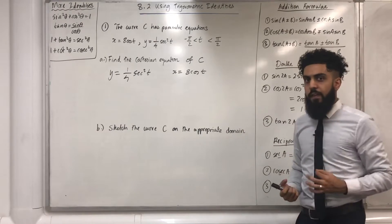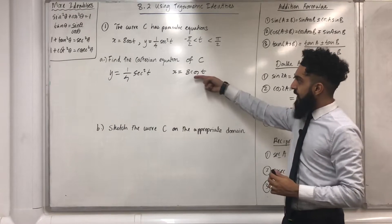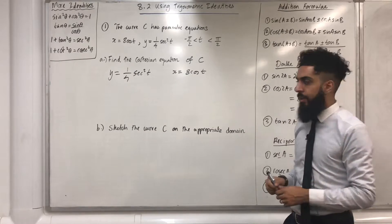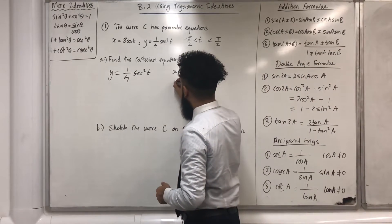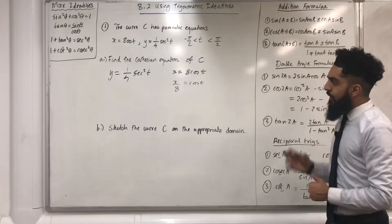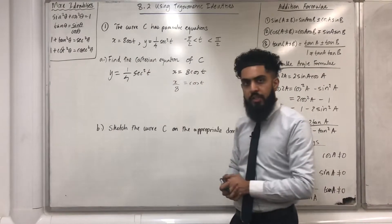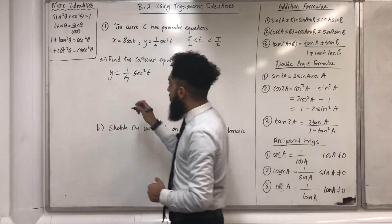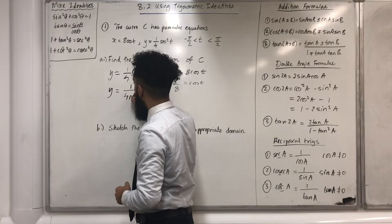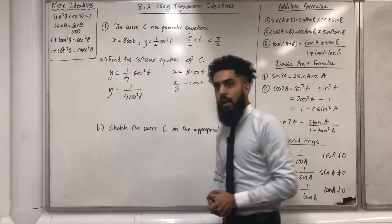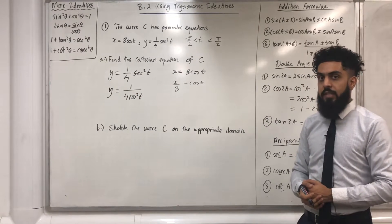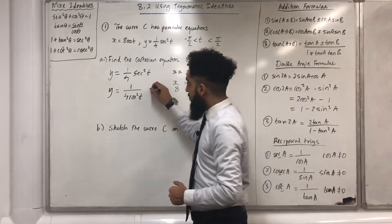What I'm going to do first of all is make cos(t) the subject in this particular equation. Something beautiful will happen — so I've got x over 8 equals cos(t). If I go back to this equation over here, I can rewrite it as y equals 1 over 4cos²(t), because sec²(t) is just 1 over cos²(t). I'm going to call this equation 1.